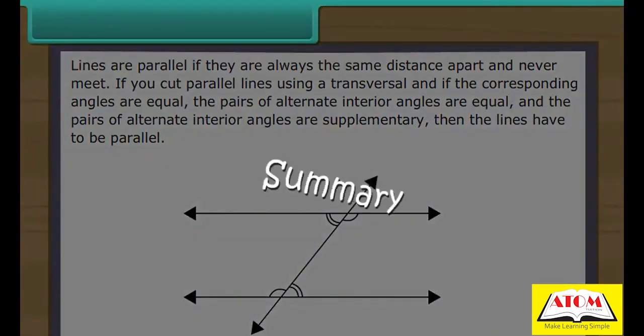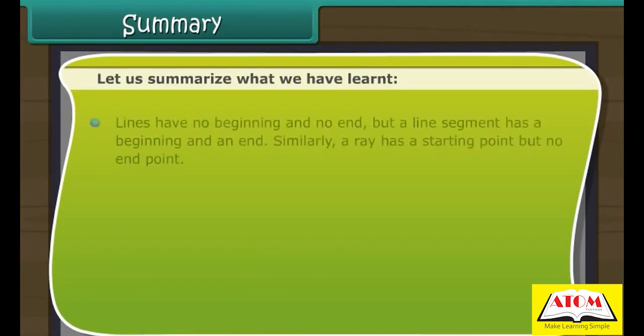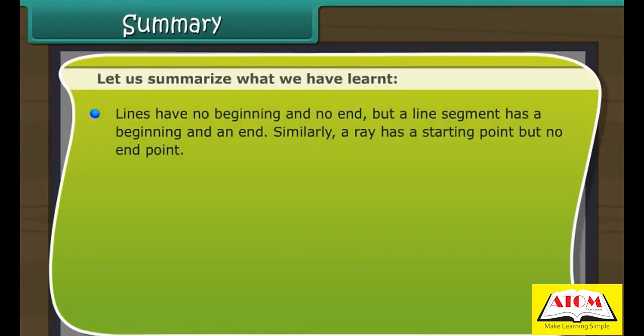Summary. Let us summarize what we have learnt. Lines have no beginning and no end, but a line segment has a beginning and an end. Similarly, a ray has a starting point but no end. An angle is created with two rays having the same starting point.